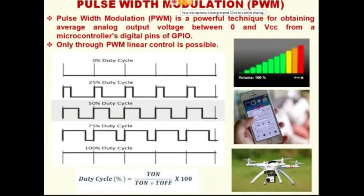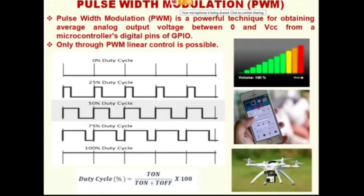With the following slides, I am trying to help you understand in a very simple way how pulse width modulation is helpful in performing linear control. What do you mean by linear control? It means varying the voltage linearly. If the voltage is connected to the volume, volume increases or decreases. If the varying linear voltage is connected to the LED, brightness will vary. If the linear voltage is connected to the motor, DC motor speed will vary.